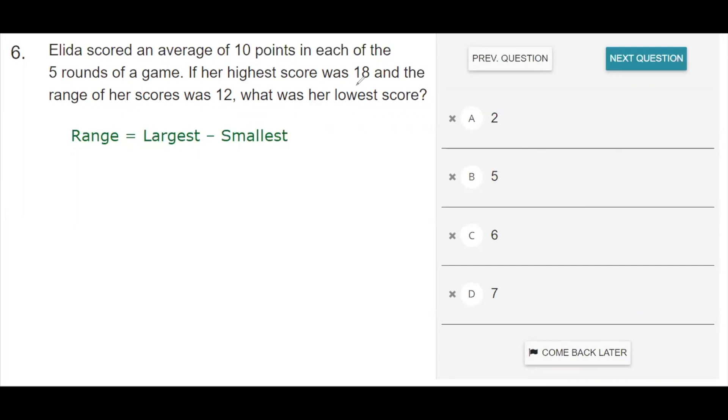they tell us that the highest score was 18, and we know that the range of the scores is 12. So we can use this information to figure out what this missing value would have to be to get the lowest score.